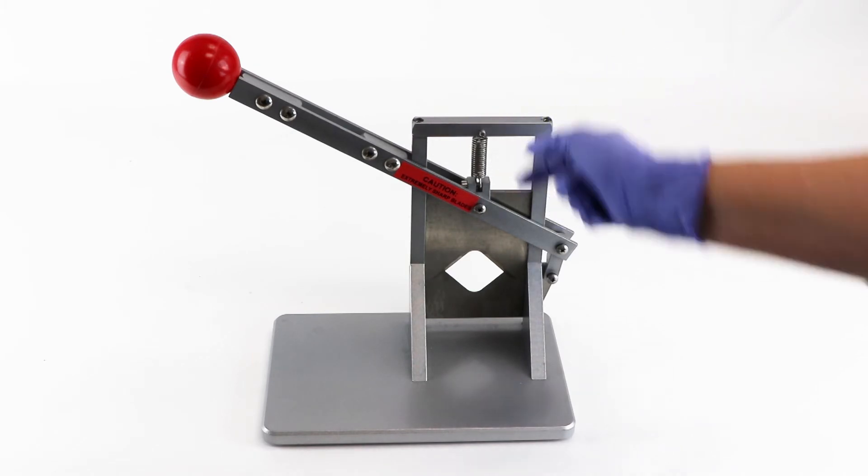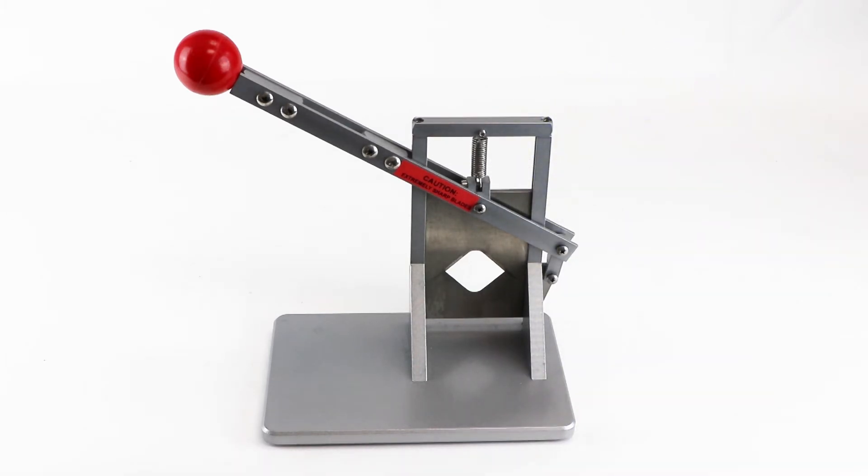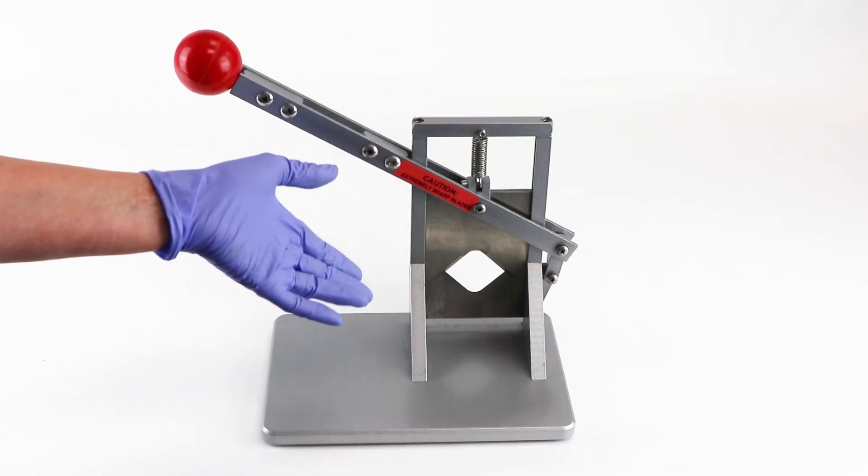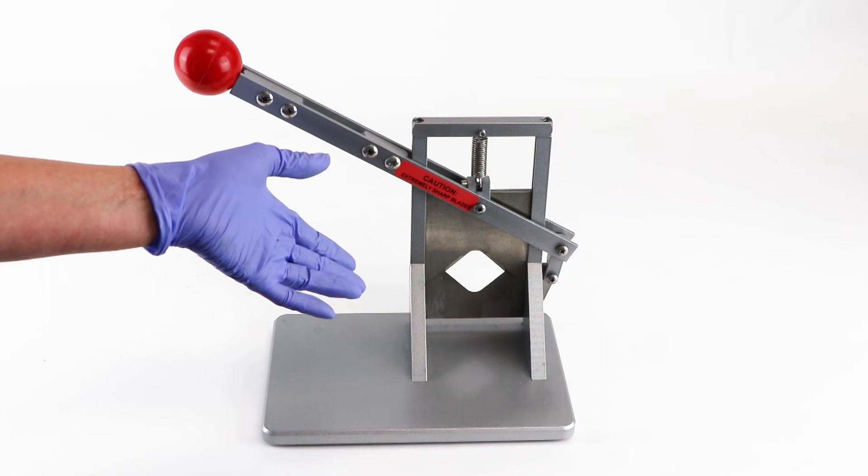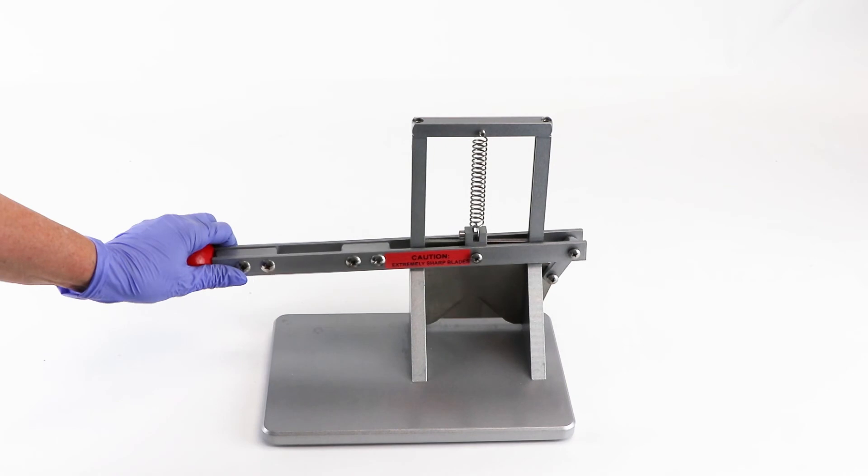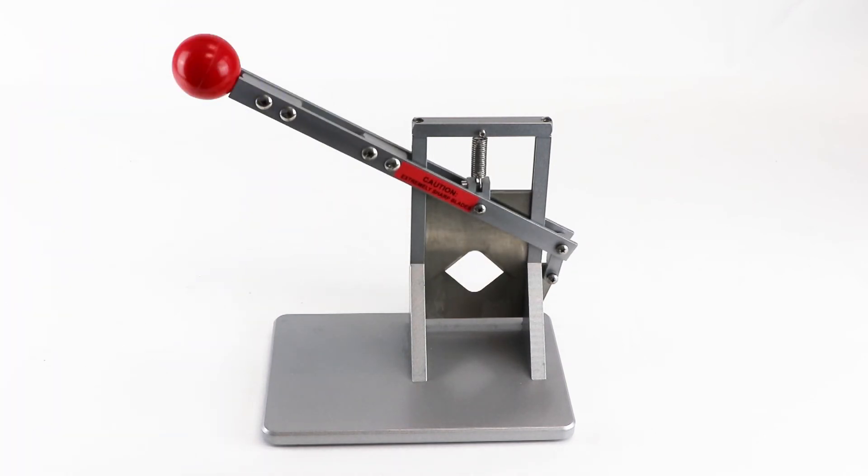This prevents the blade from accidentally falling and injuring laboratory personnel. It also makes it quicker to dispatch the subject, requiring only a single downward action. This guillotine is designed specifically for laboratory work.